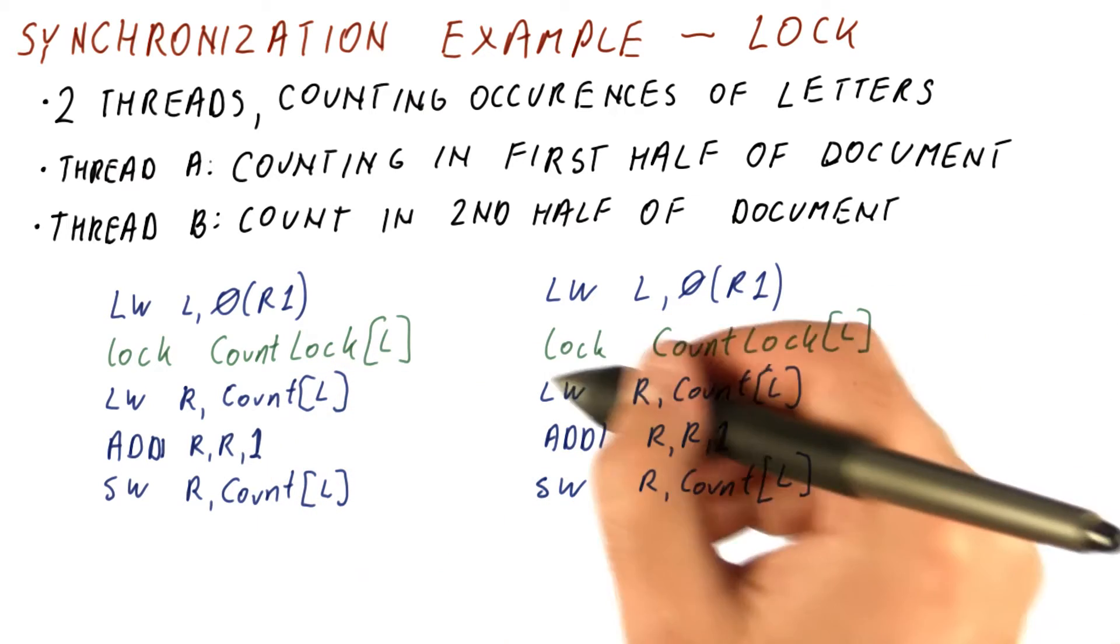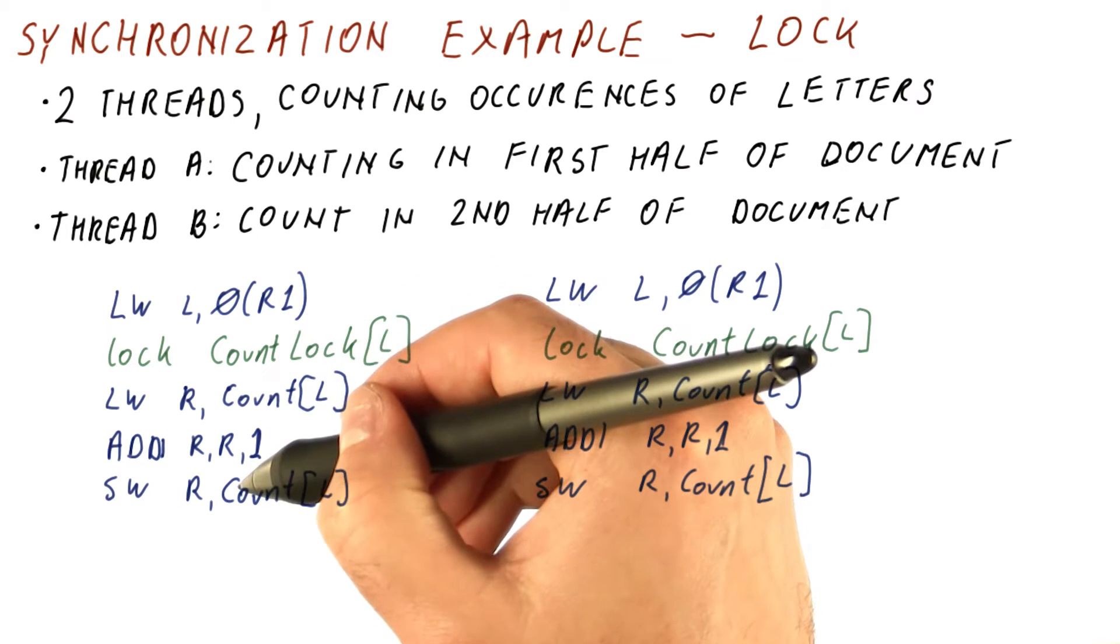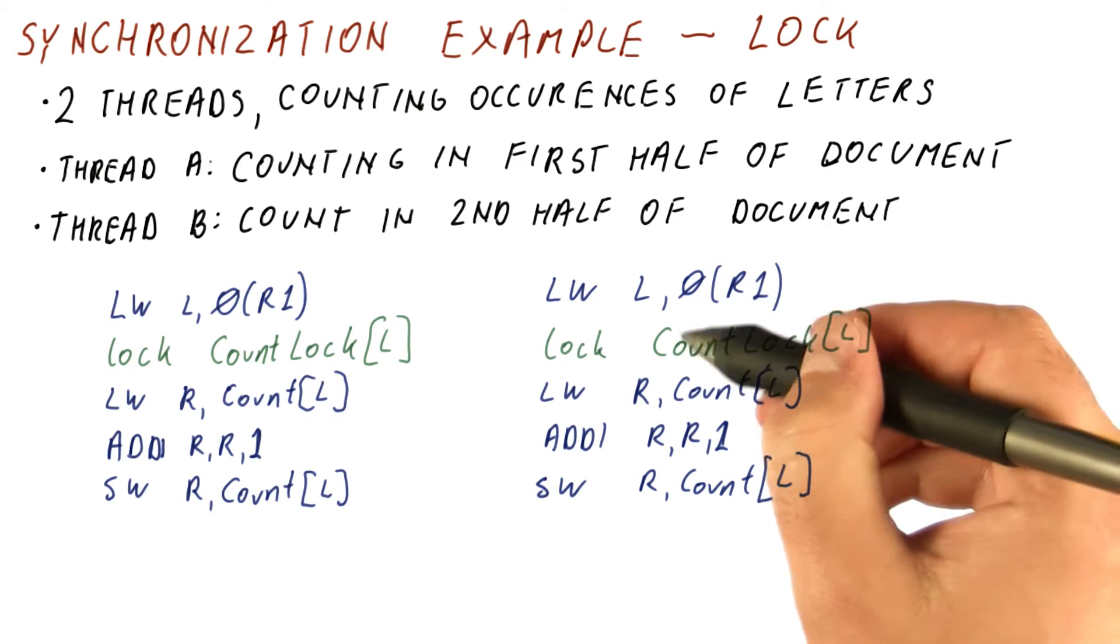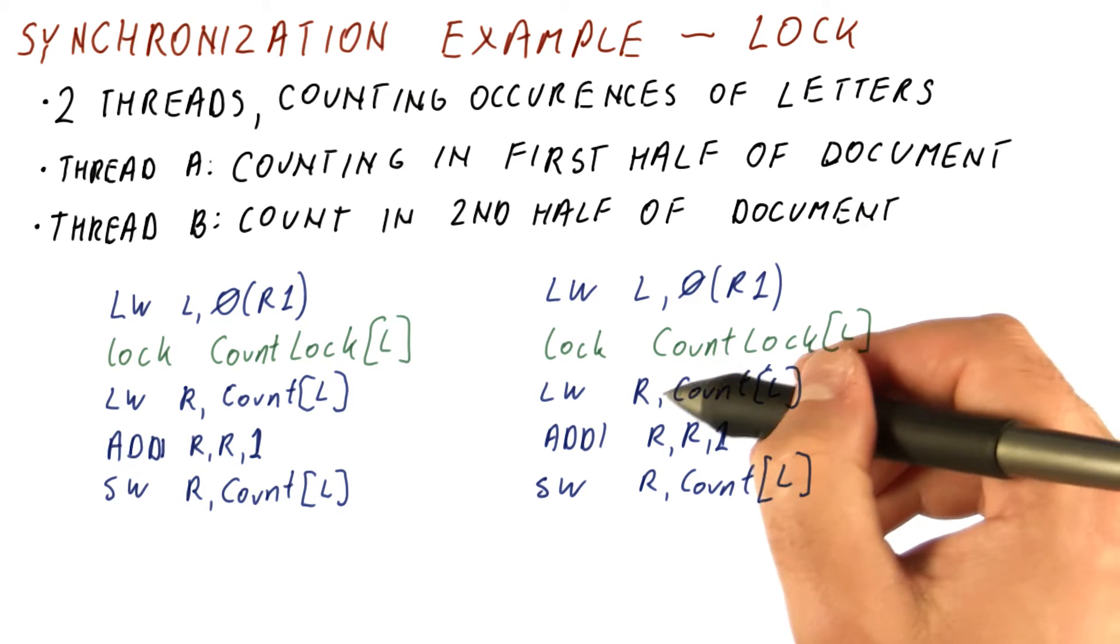The other thread will do the same. So the first one of them that succeeds in grabbing the lock will enter this critical section. The other one will now realize that this count lock has been locked and will have to wait there.